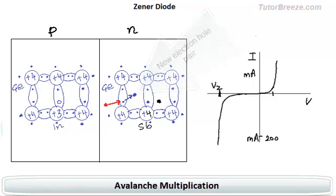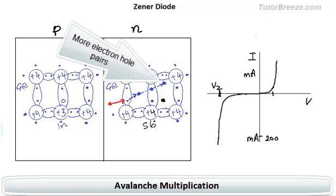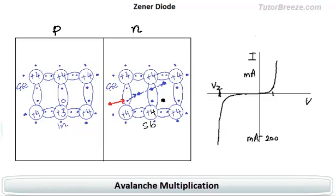And these once again start accelerating, colliding with other crystal ions, producing electron hole pairs and this process is going to continue. The cumulative effect of this phenomena is that we have an extremely large number of charge carriers. It's somewhat like an avalanche of approaching charges and this is called avalanche multiplication and the diode in this case is said to be in the region of avalanche breakdown.